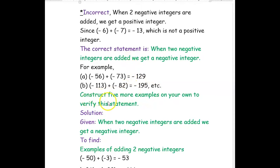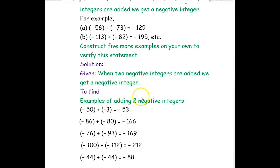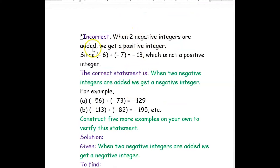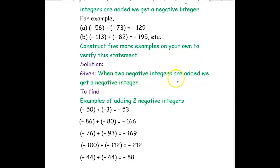Similarly, negative 113 added with negative 82 gives negative 195. The question asks us to construct five more examples to verify this statement. When two negative integers are added, the result is a negative integer. So, negative 50 added with negative 3 gives negative 53 — two negative numbers added give a negative number.